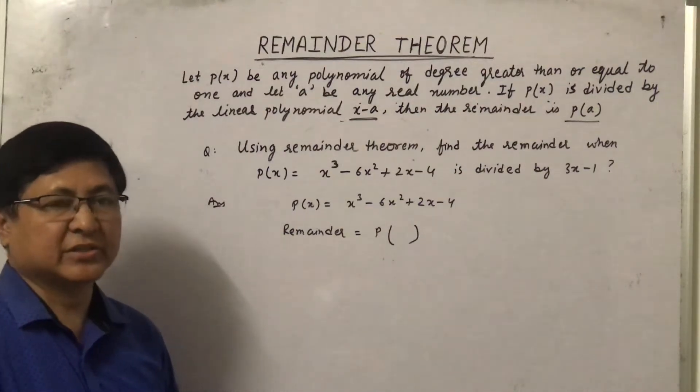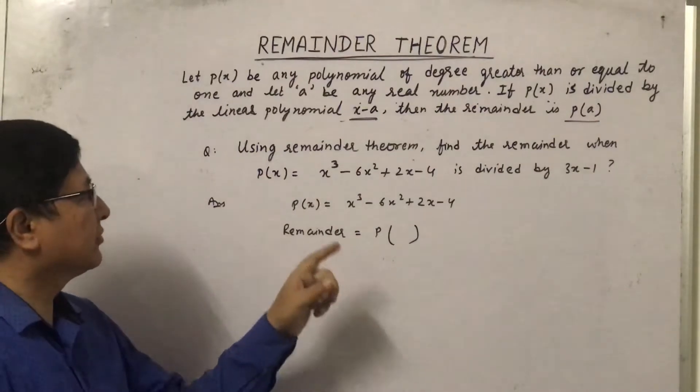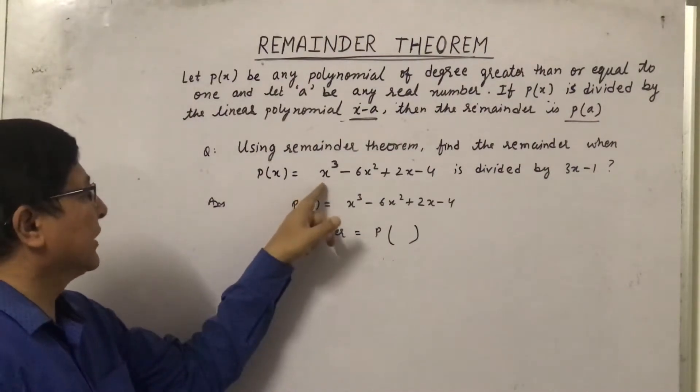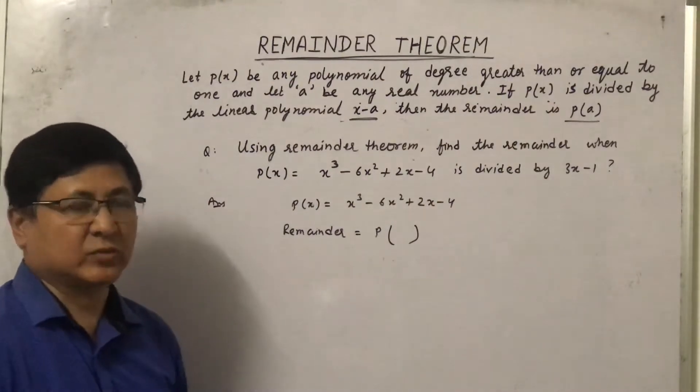Hello students, now let us take the last example of the remainder theorem. Using the remainder theorem, find the remainder when p(x), that is x³ - 6x² + 2x - 4, is divided by 3x - 1.